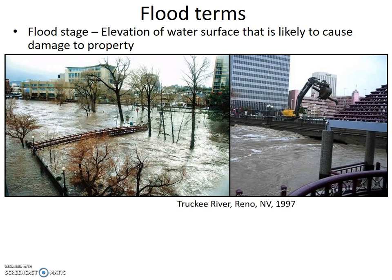Flood stage is the elevation of the water surface that is likely to cause damage to property — not necessarily when the stream overflows its banks, but when property might be damaged. These two images are from the Truckee River in Reno, Nevada during the 1997 flood. Property was definitely damaged, and a steam shovel is shown trying to save a bridge by removing debris dams so water can still flow underneath.